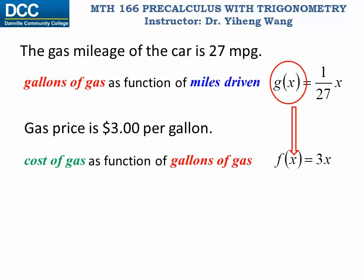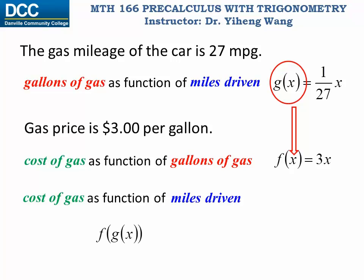Based on that, we can combine these two functions and write another function — cost of gas as a function of miles driven directly. This new function is the composite function of f and g. For f composed with g, we evaluate it the same way as any f function: we substitute x with g(x), and since g(x) equals 1 over 27x, we substitute that in, and eventually get 1 over 9 times x.